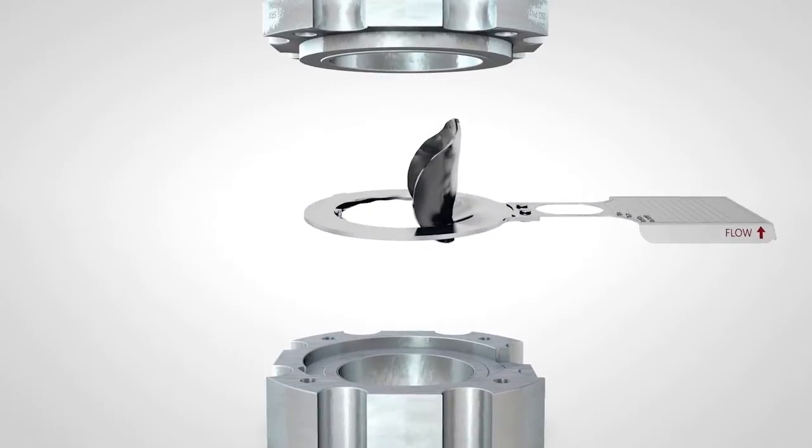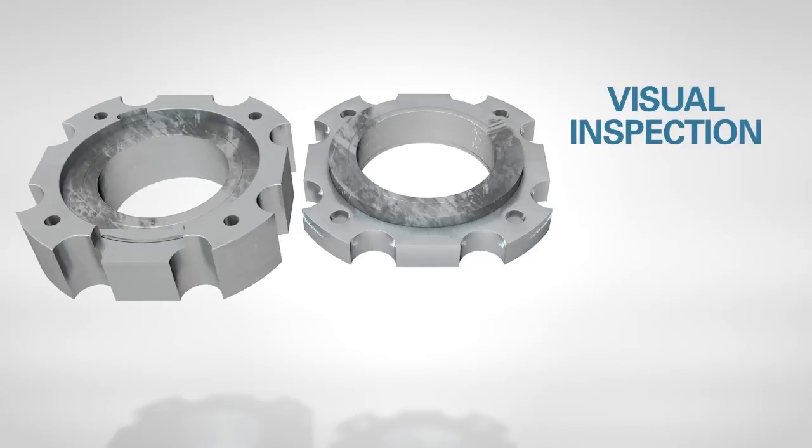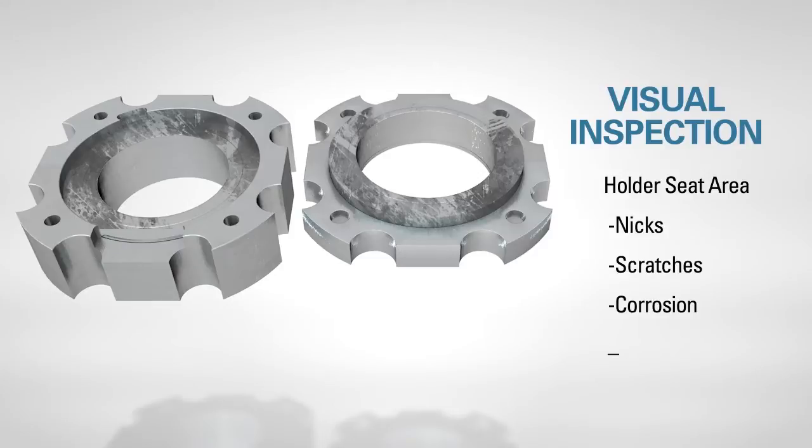If this is an existing installation, do a visual inspection of the rupture disc holder. Inspect the holder seat area for nicks, scratches, corrosion, or deposits left by the process media.